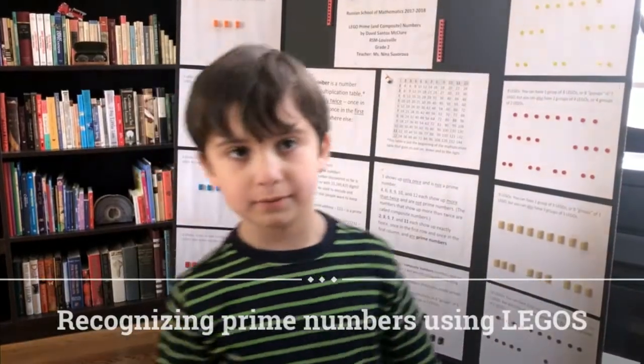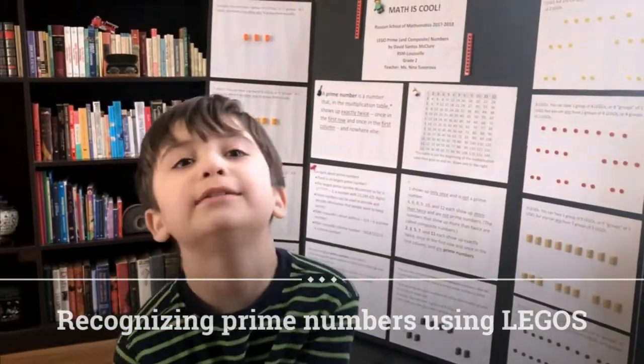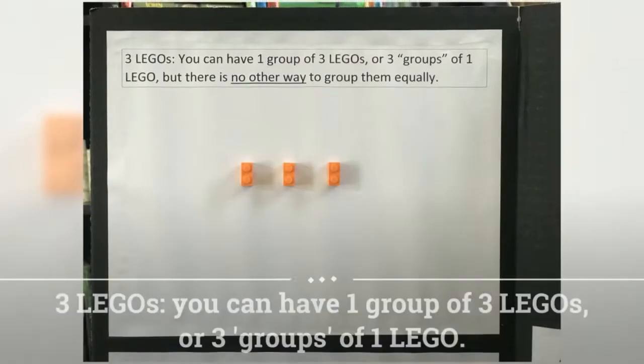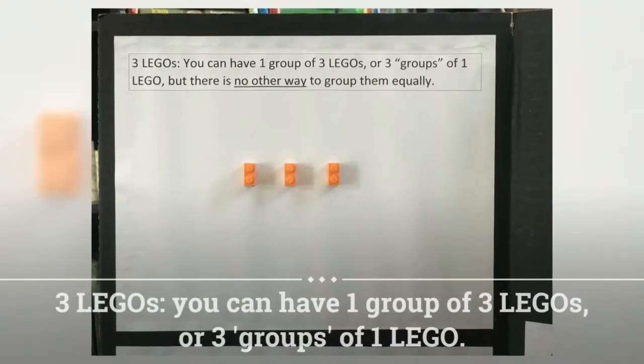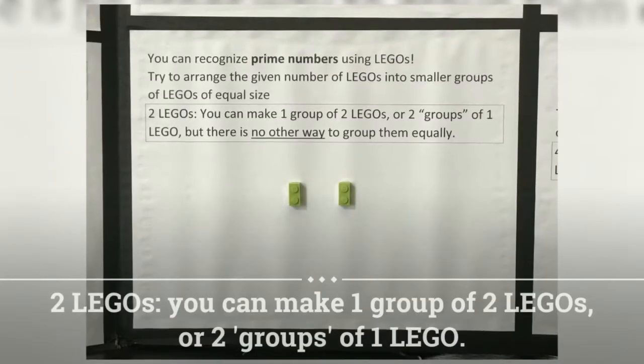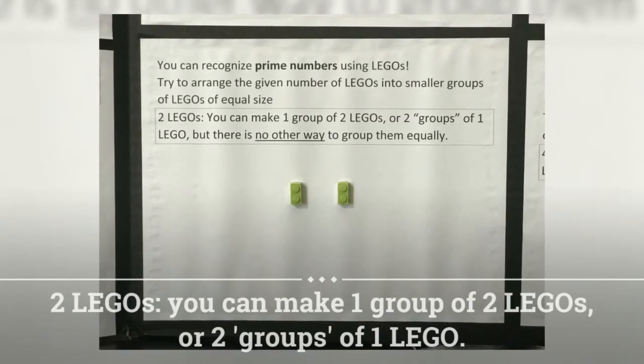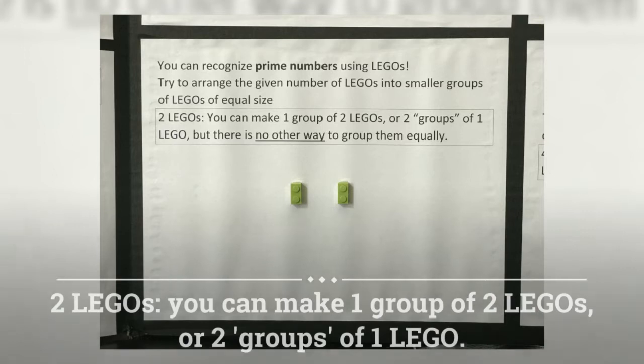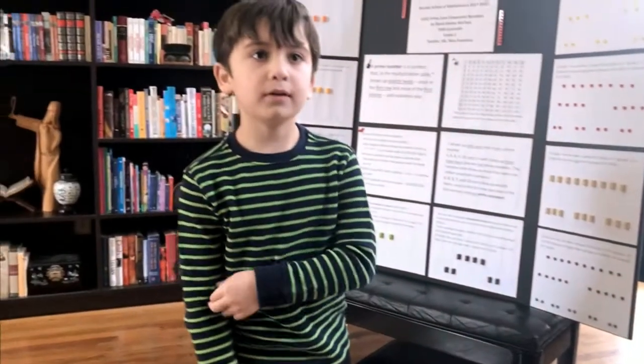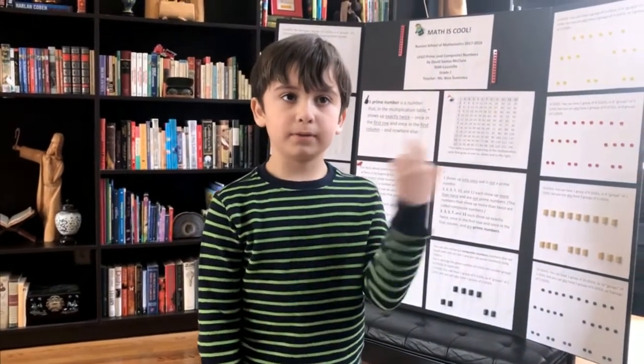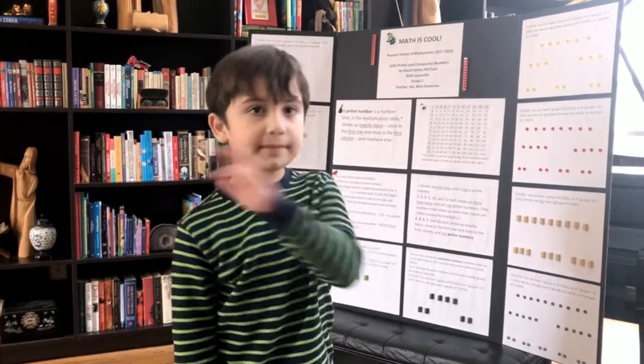For prime numbers using Lego, try to arrange the given number of Legos into smaller groups of Legos of equal size. Two Legos: you can make one group of two Legos or two groups of one Lego, but there's no other way to group them equally.